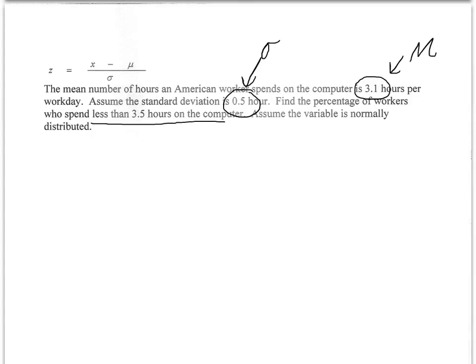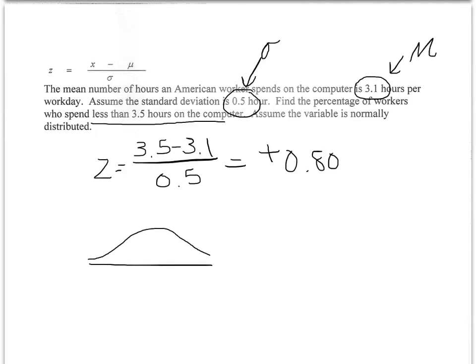Well, the first thing we have to do is we have to find our z-score. We plug in our x value 3.5, our mu 3.1, and our standard deviation, and that's going to give me a z-score of positive 0.80.